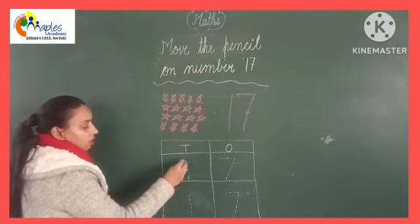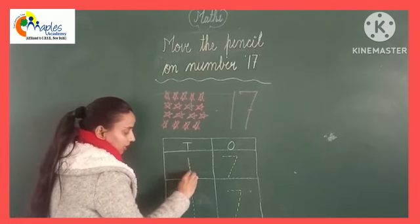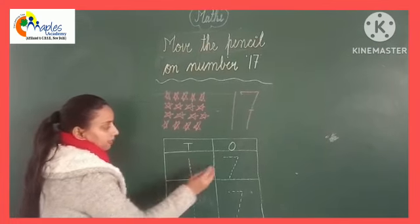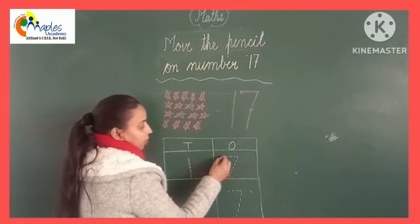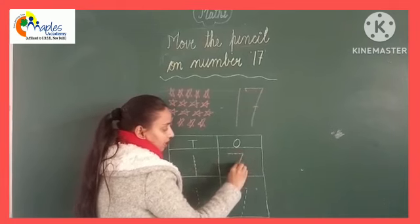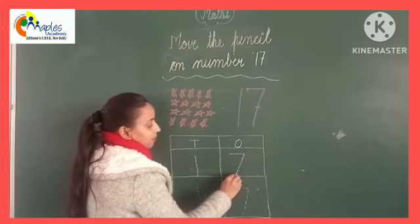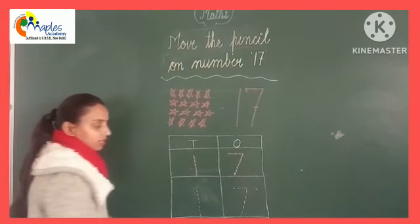Now make a standing line and now make a sleeping line and a slanting line. It is called number 17.